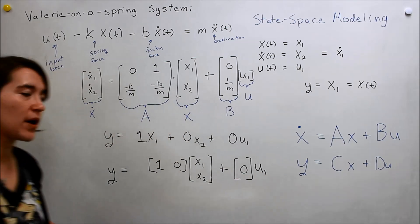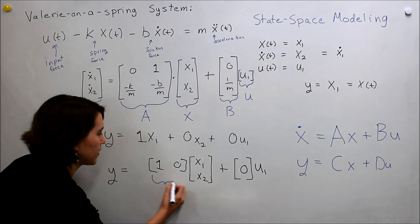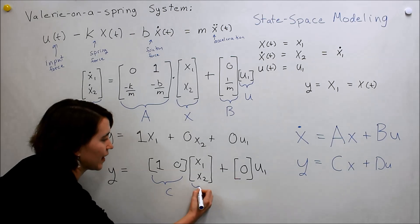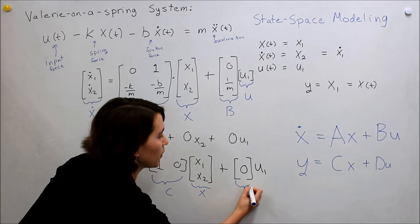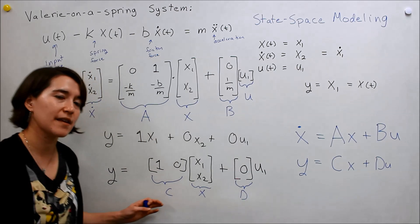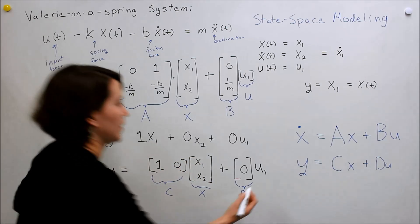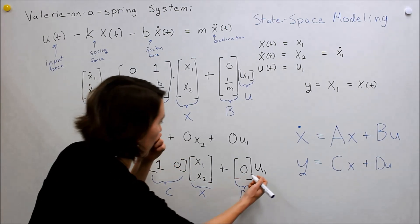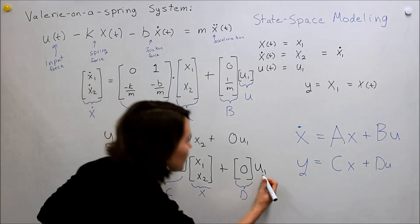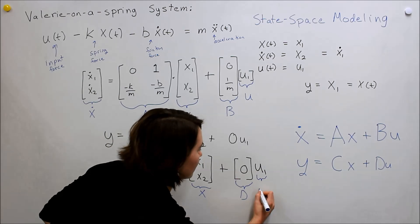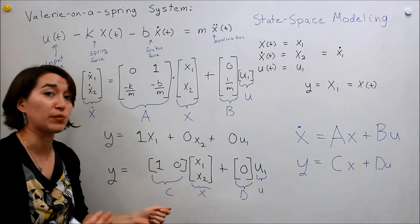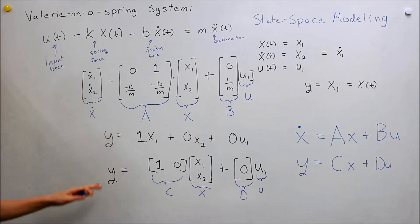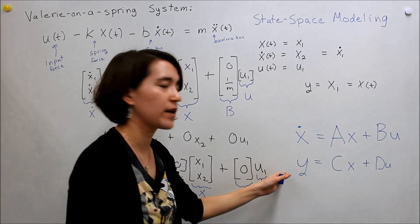If we kind of identify the different parts of that, we would call this C, here again, just like before, it's x. This is going to be what we would call D. In this case, it's 0. A lot of cases, it'll be 0, but just for completeness, we're putting it there. And then this, again, is u. And in this case, we only have one input, but we could have a case where there's multiple inputs. So we've now put this into our standard form. So this is a standard form.